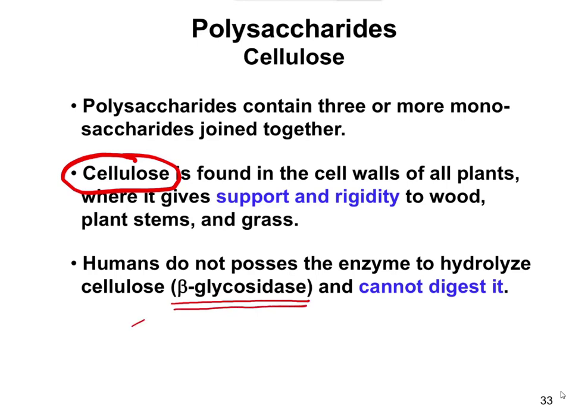The really interesting thing about that is the beta part of it. Beta-glycosidase and alpha-glycosidase are two different enzymes, and the only difference is the type of glycosidic linkage — an alpha- or beta-glycosidic linkage — that links together the sugars. As humans, we do have alpha-glycosidase and can break down glucoses linked through alpha-glycosidic bonds, but not when they're linked by beta-glycosidic bonds.